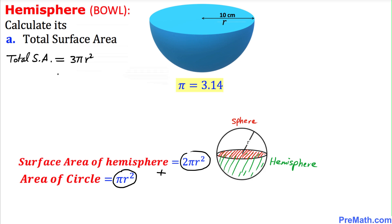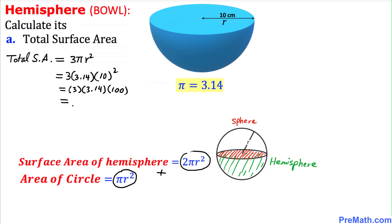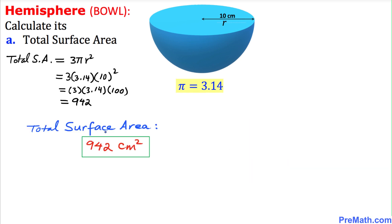Let's go ahead and calculate the total surface area. We fill in: 3 times π, and π is 3.14, times r² where r is 10 centimeters. So that's 3 times 3.14 times 100, and if we multiply everything out we get 942. So the total surface area of this given shape turns out to be 942 centimeters squared.